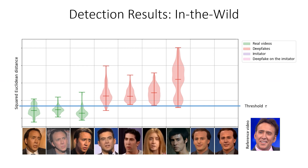For deepfakes, all distances are higher and thus detected as fakes. An interesting case is the video related to an imitator, which shows a much lower distance since he is imitating Nicolas Cage. A deepfake driven by the imitator strongly reduces the distance, but ID Reveal still distinguishes it from real videos.